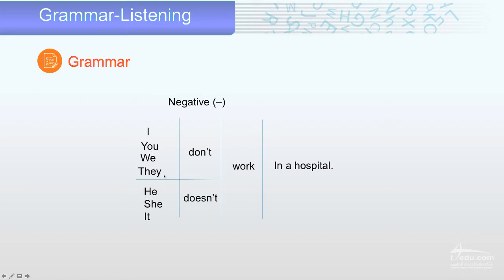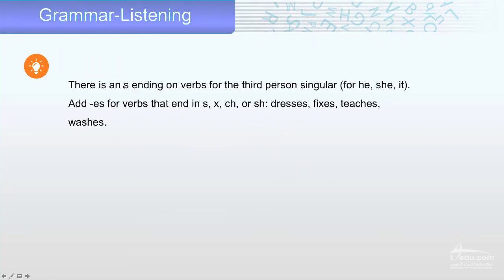Don't with I, you, we, they. Or doesn't with he, she, it — the verb without adding anything. Very important piece of information: there is an S ending on the verb for the third person singular. Third person means me and you are talking about him or her. We add S to the verb.